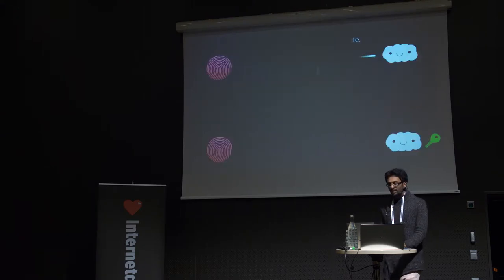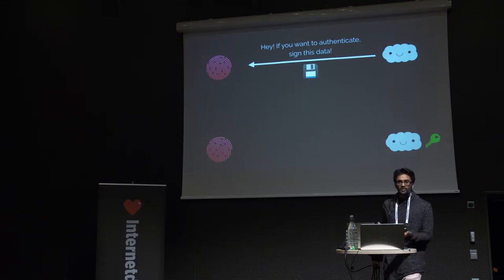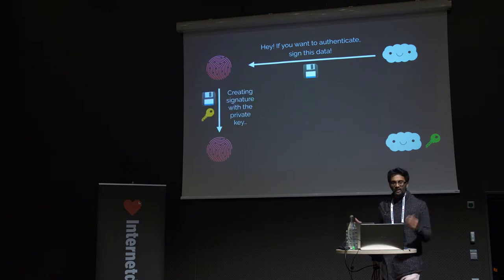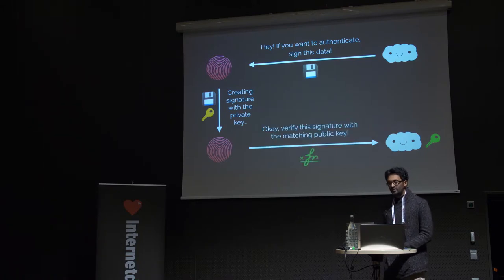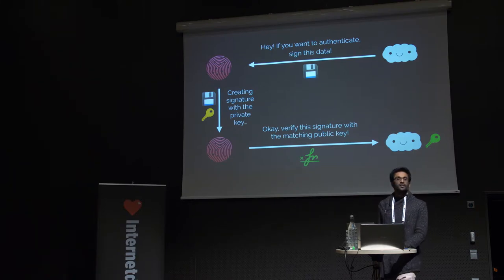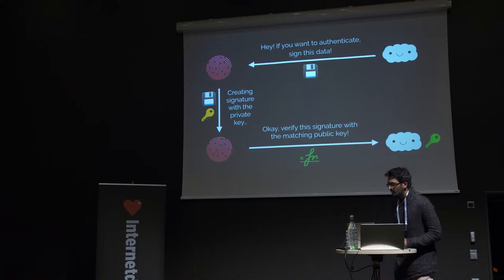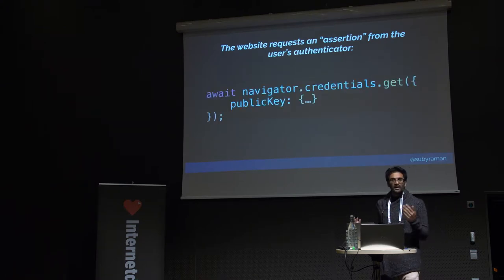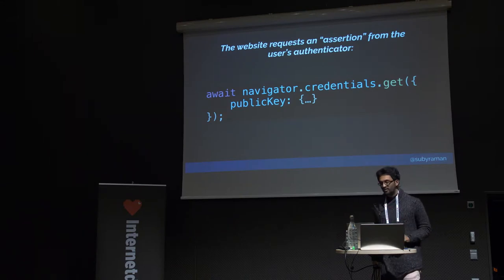During authentication, the server requests a signature — an assertion that the user indeed owns the private key they registered with. We say: sign this data. A signature is created with the private key, the signature is presented to the server, and then the public key gained during registration is used to verify this signature. The combination of the public and private key is used to authenticate the user. On the front end, you have the .get function — you pass in some configuration, and this creates the signature.